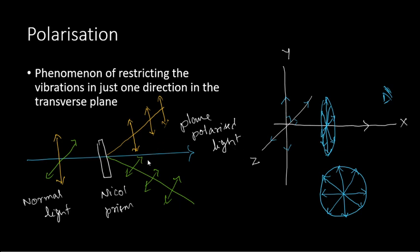Such plane polarized lights are optically sensitive. When they are passed through any optically active solution like sugar solution, the plane polarized light is rotated. That phenomenon is called optical activity. When it is rotated towards the right, it is called dextrorotatory. When the plane polarized light is rotated towards the left, that is anti-clockwise, then it is called levorotatory. But we are going to focus on the plane polarized light here.